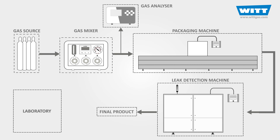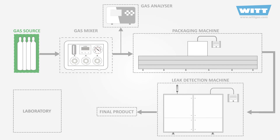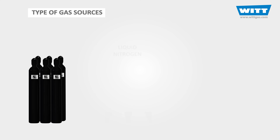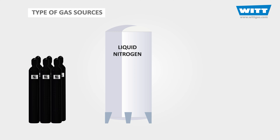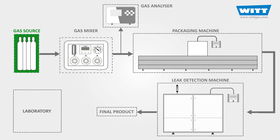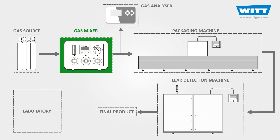At the very beginning, there are the gas sources. By gas, we mean nitrogen, carbon dioxide, and of course oxygen. These gas sources can be in the form of cylinders, cryogenic tanks, or in some cases gas generators. To start the process, these gases get transferred into the gas mixer to create the desired mixture of nitrogen, carbon dioxide, and oxygen for different types of foods.